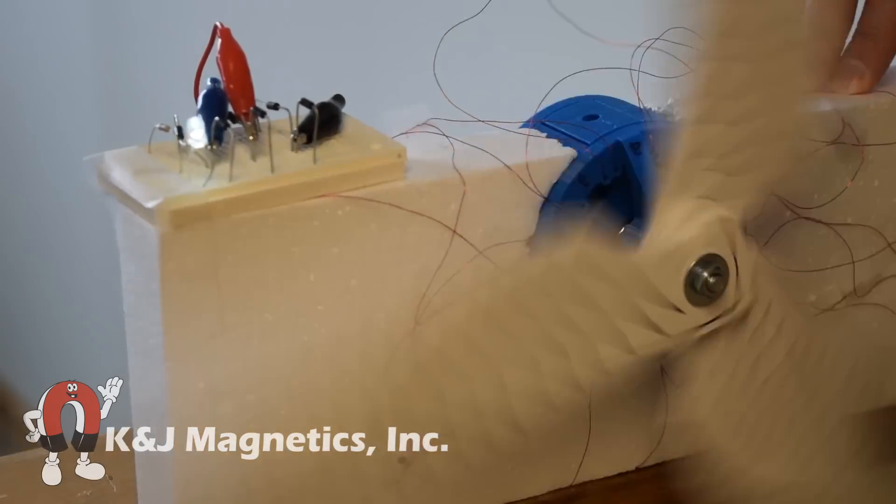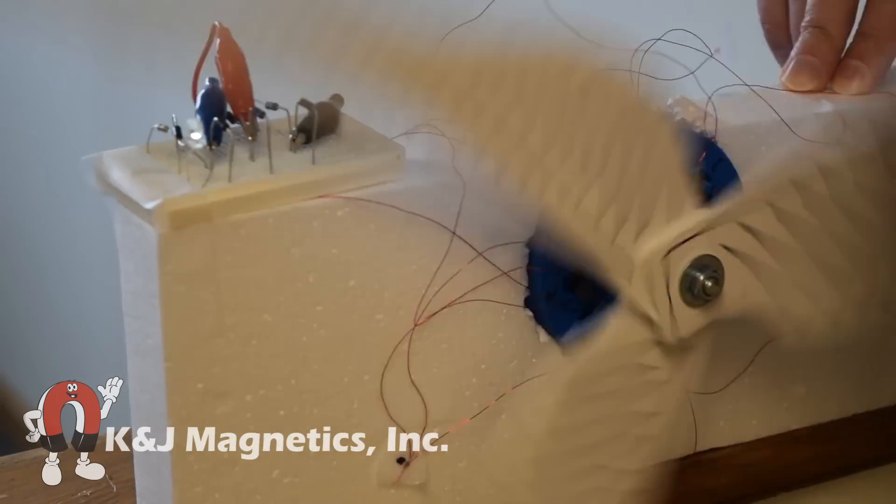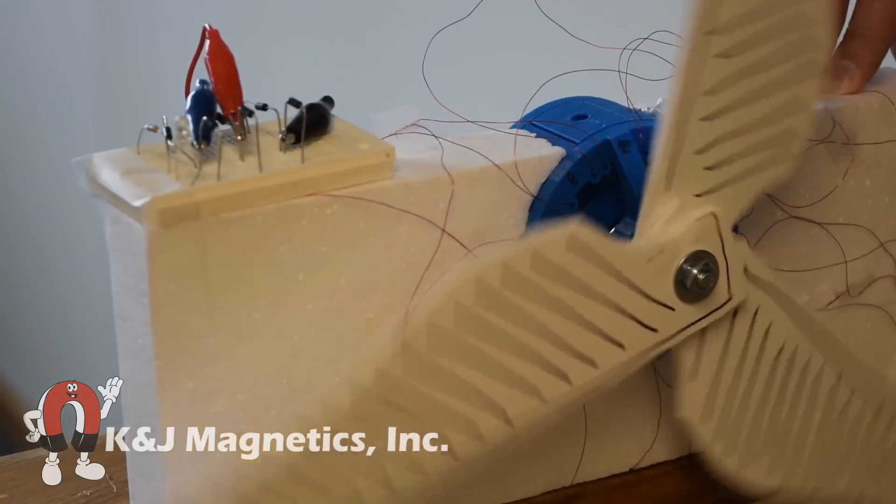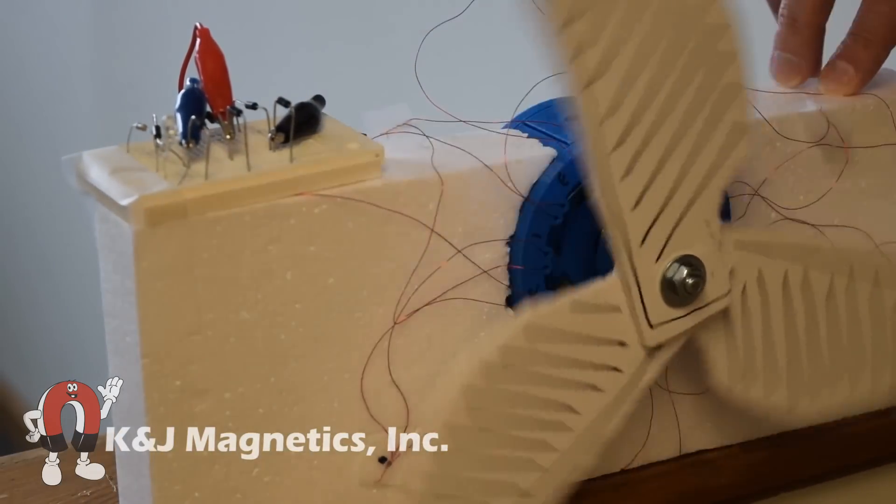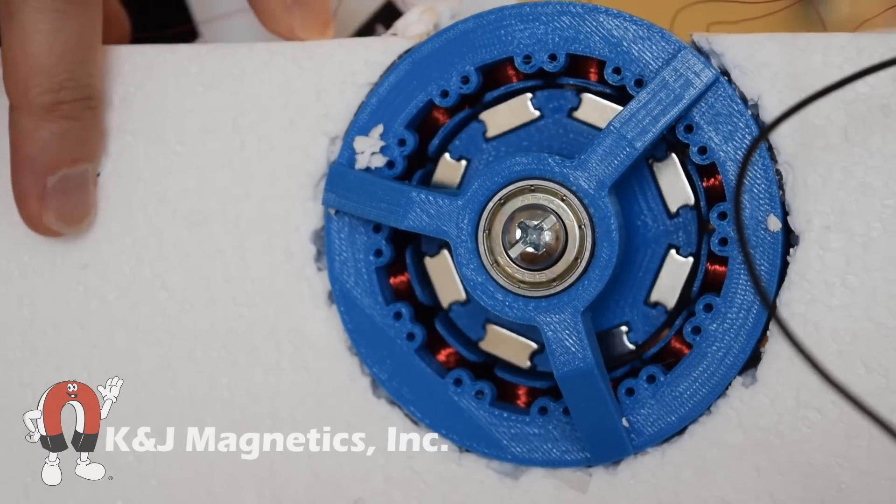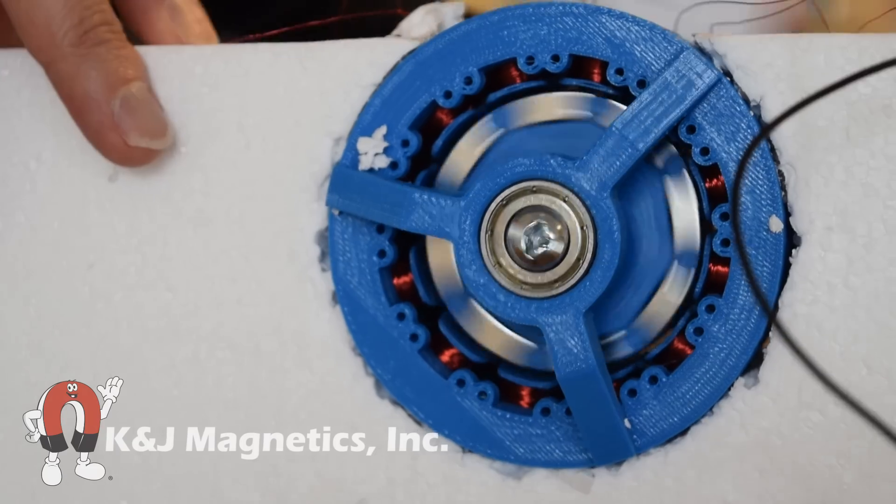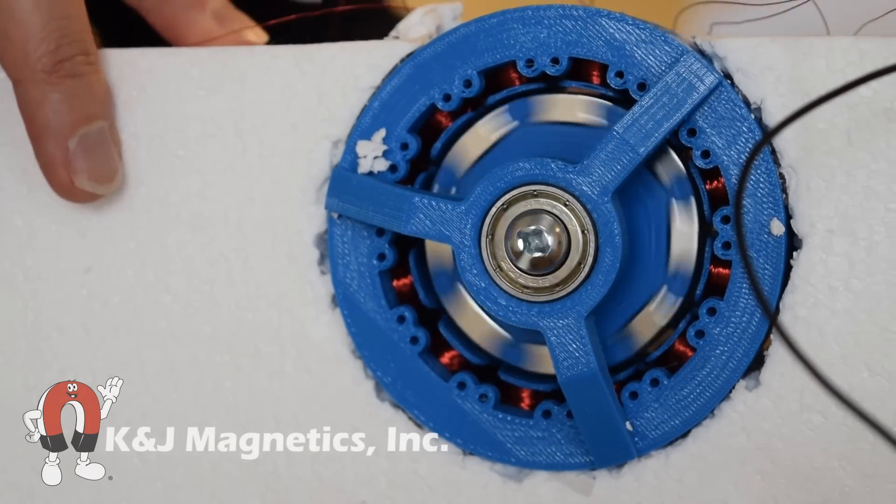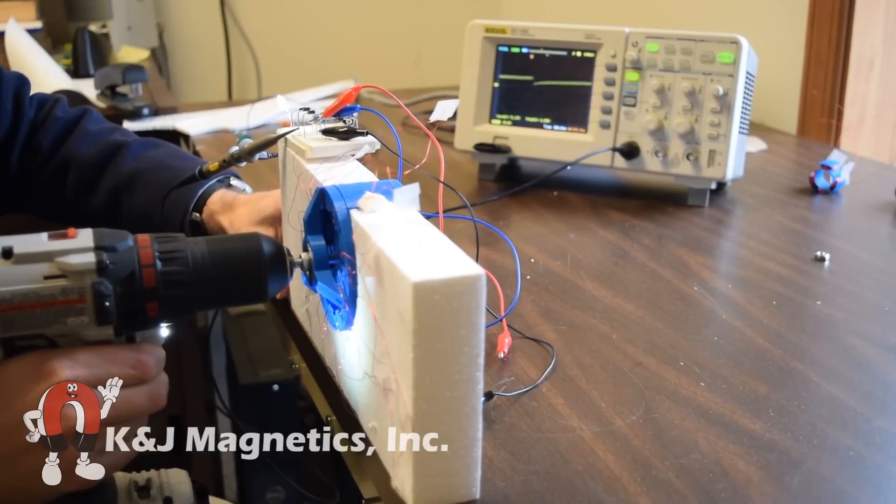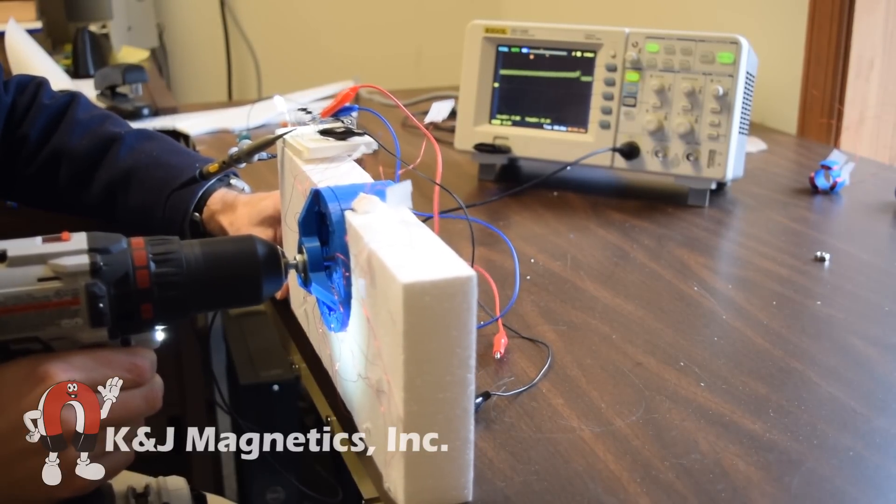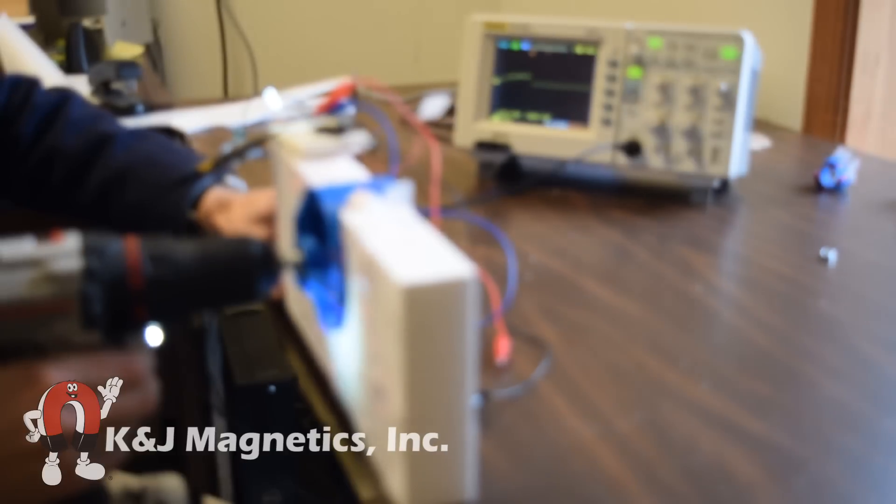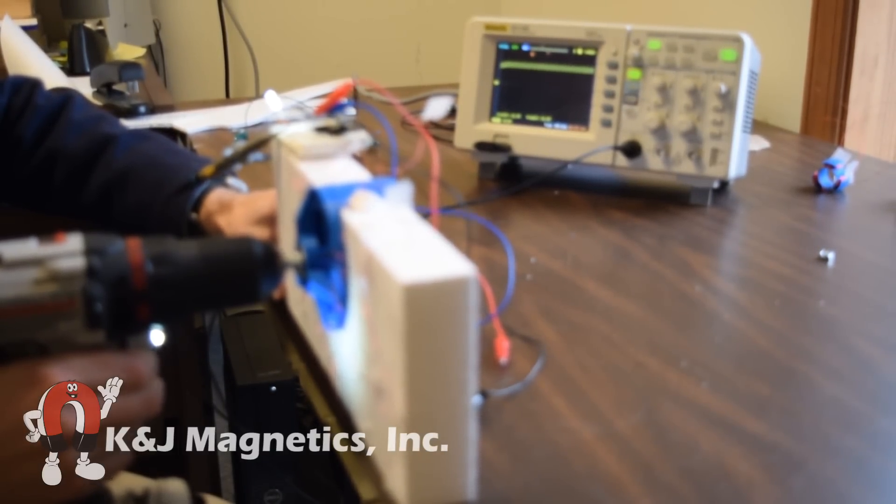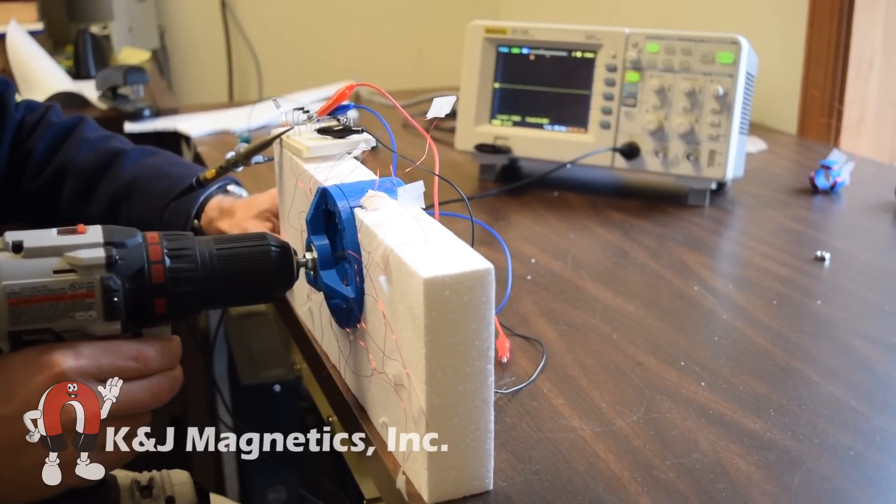This cardboard mock-up is pretty rough, but it shows the generator works pretty well. Here's a nice zoom in shot of the eight magnets spinning freely inside the twelve coils. It's like 20 volts. Cool. Wow.